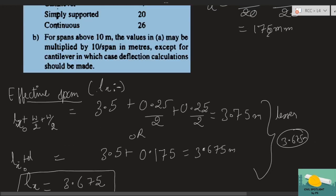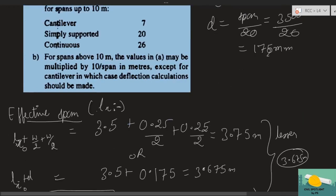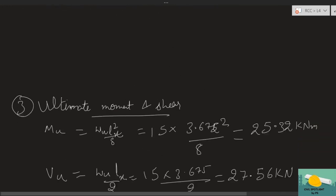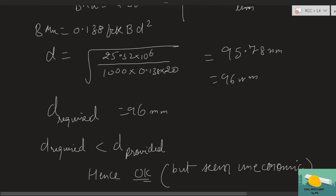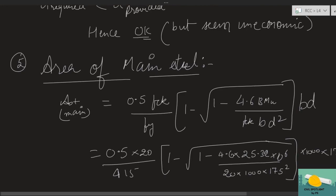The design is uneconomical but intentional for learning. To make it economical, one should use the modification factor. I wanted to show you why the modification factor matters — it requires provided vs. required steel ratio. Books sometimes jump to multiplying by 1.3 or 1.4 without explaining why. I'm teaching from first principles so your concept is built properly.